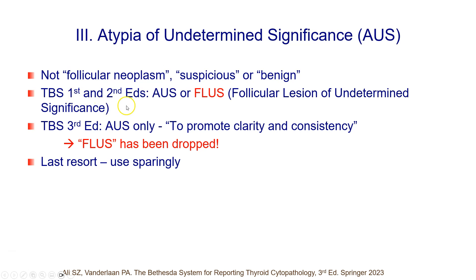In the first and second editions of the Bethesda System, this atypical category was called AUS — atypia of undetermined significance — or FLUS, follicular lesion of undetermined significance. In the third Bethesda System edition, the term FLUS has been dropped and the category has been unified into AUS only, to promote clarity and consistency.